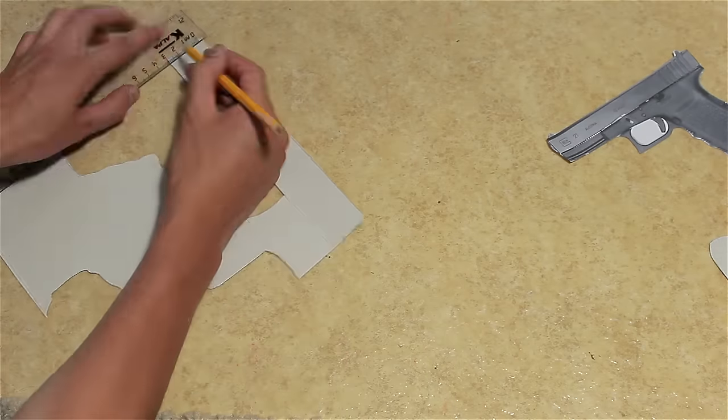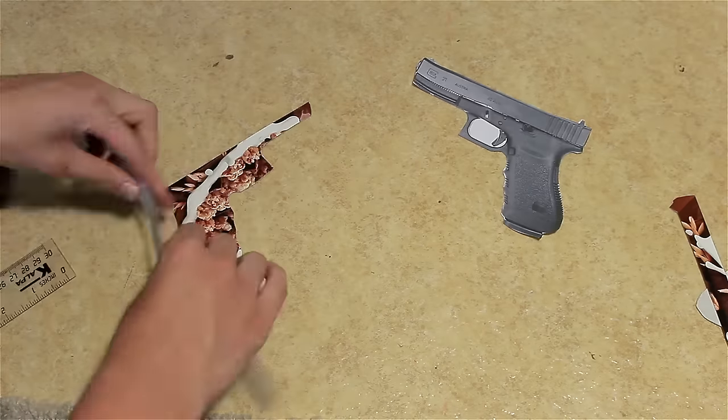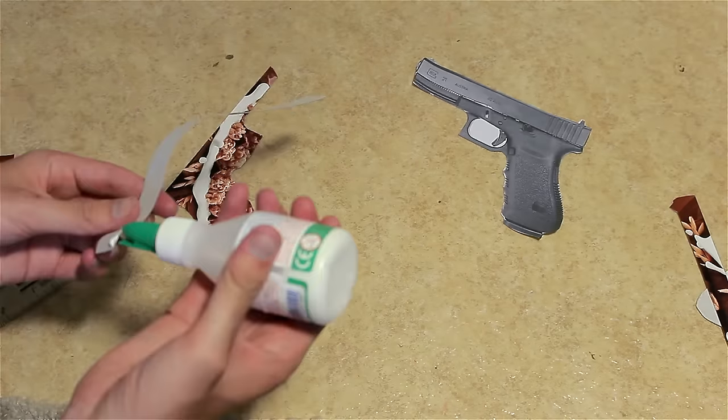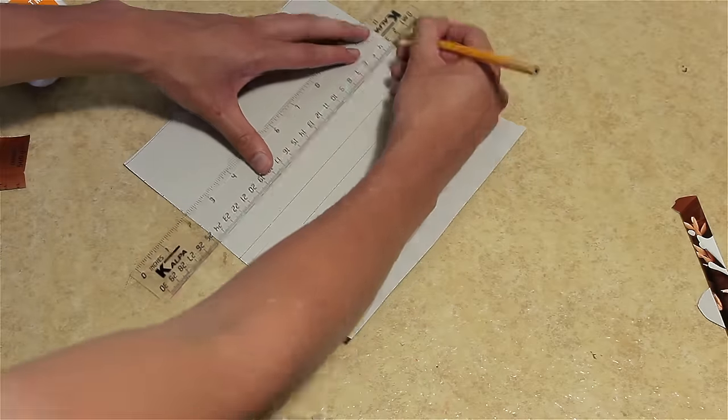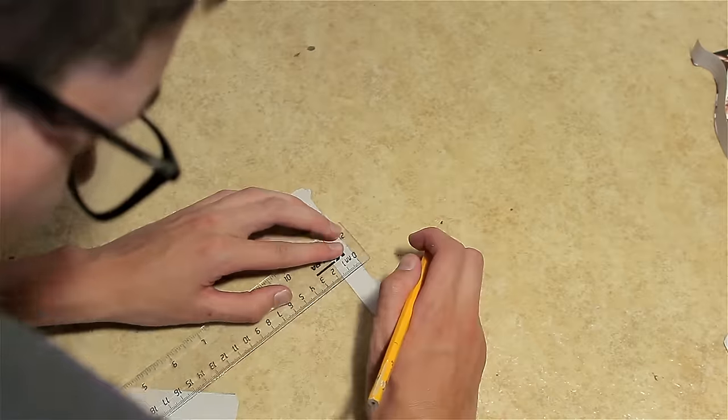Then we're going to make some strips for the thickness and fold them like this and then glue them. Of course, make a lot more strips so that you can cover the whole gun with it. Now make the part where the bullet should pop out.